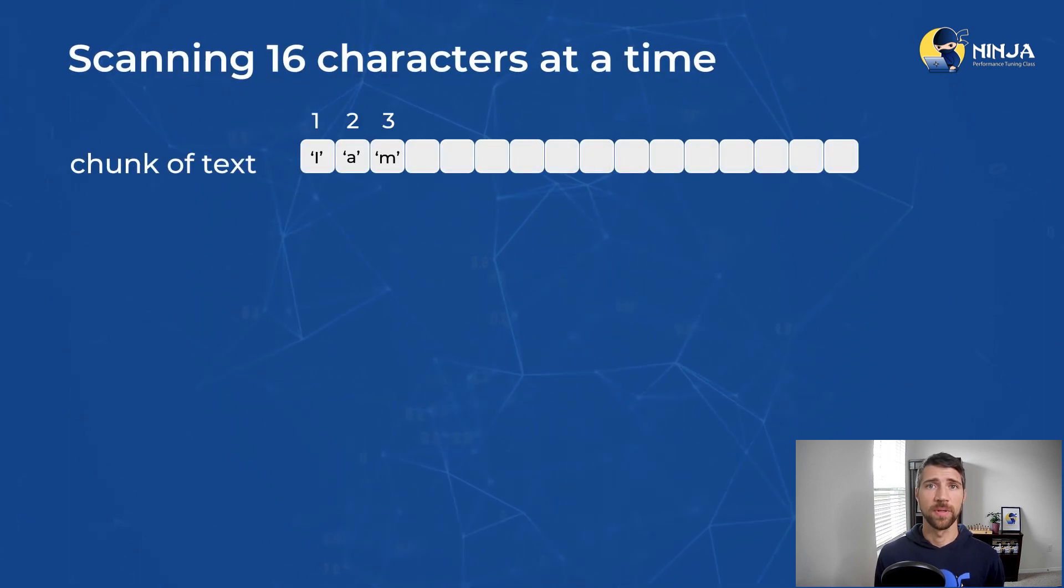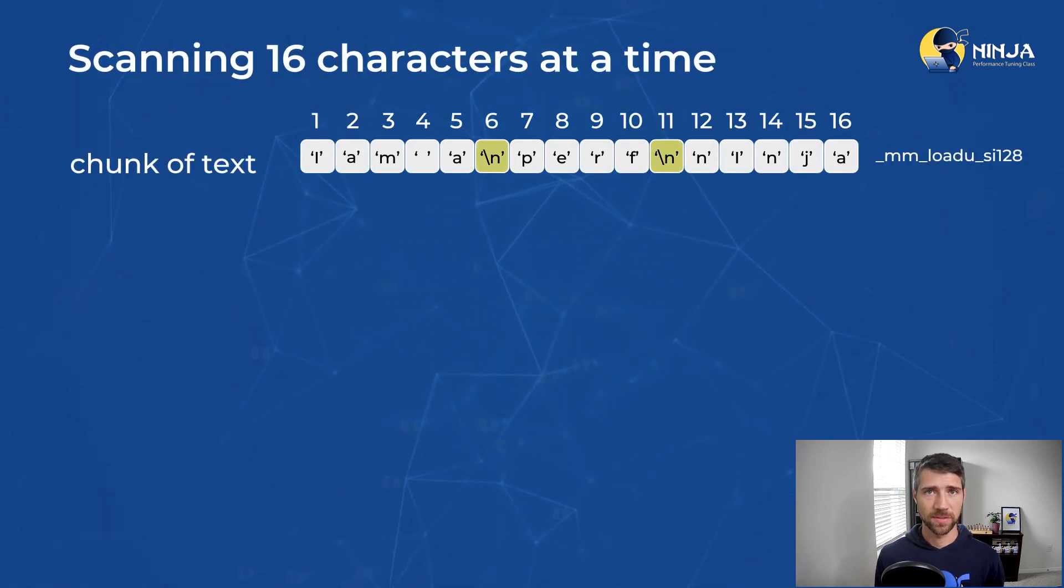So how do you go about processing multiple characters at the same time? Let's see. Here is an example of processing 16 characters simultaneously. First, we need to load the chunk of characters from our string into a vector register. And on the right, you can see a corresponding x86 intrinsic to do that.